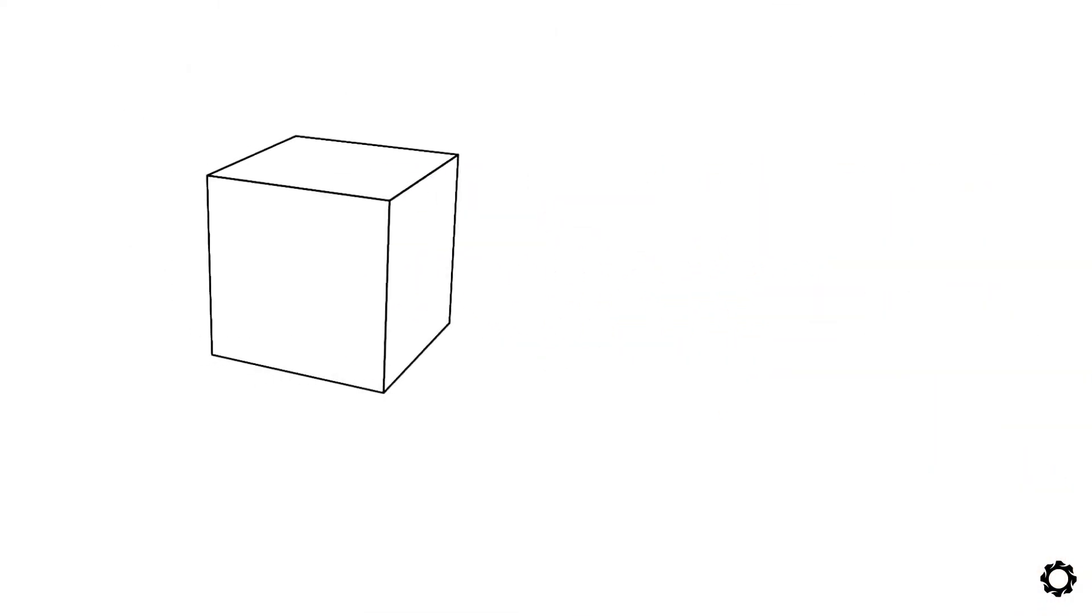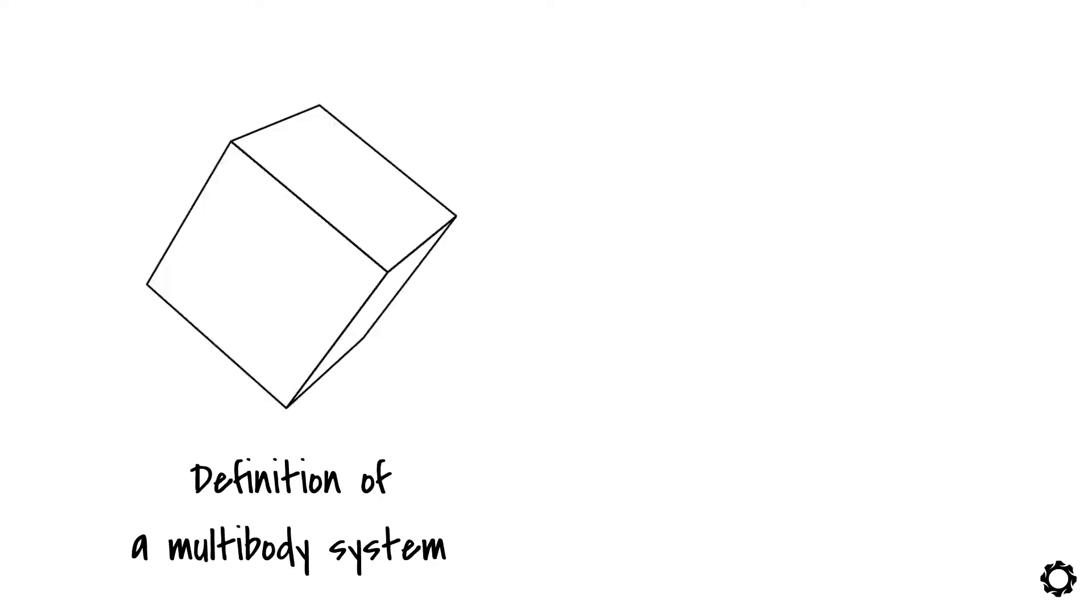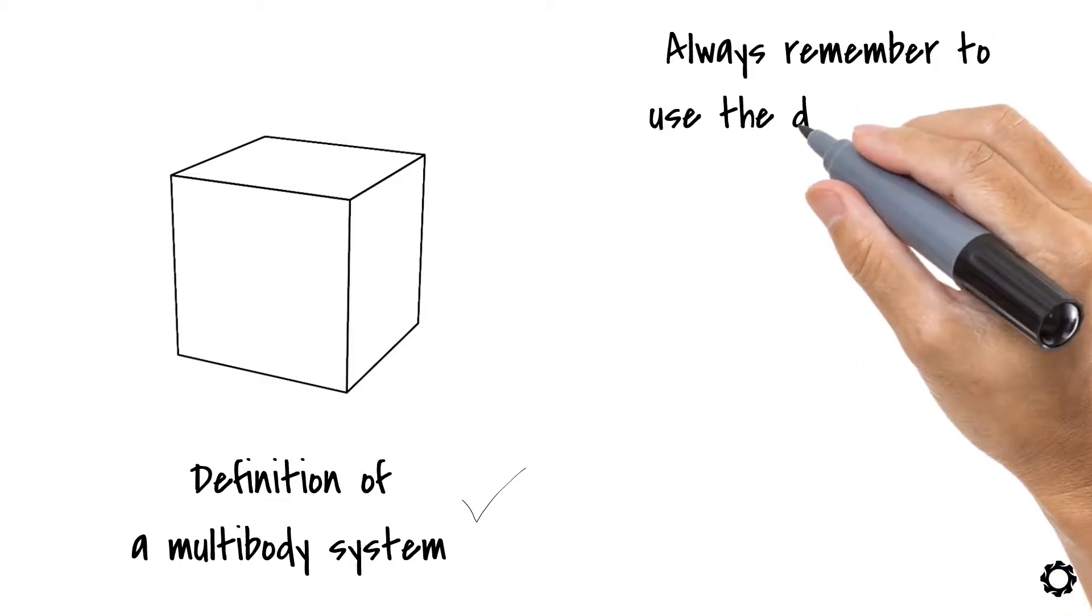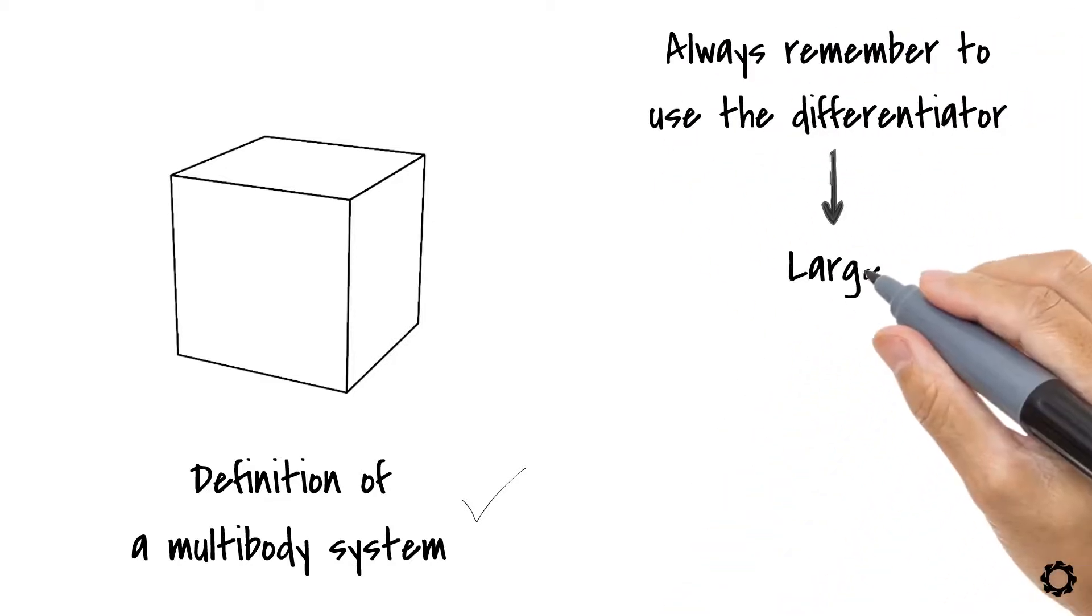In space, we have six possible rigid body motions. You guessed them. Three translations and three rotations. Now our definition of a multibody system is complete. Always remember to use the differentiator. Look for large displacements.